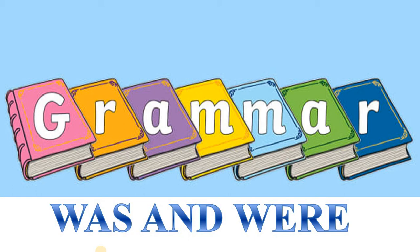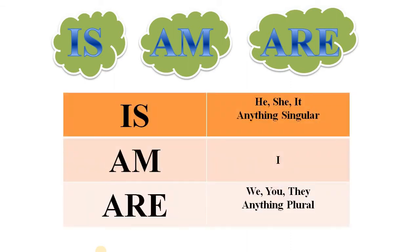Have you remembered your previous lecture? In that lecture, we learnt about the use of is, am, and are. We came to know that 'is' is used with a singular noun — he, she, it, or anything singular. 'Am' is used with 'I', and 'are' is used with we, you, they, or anything plural.